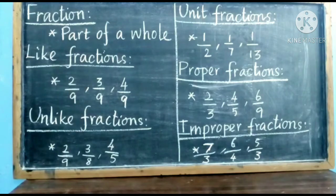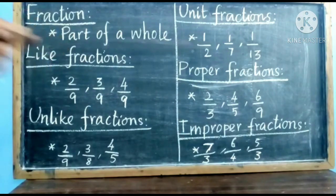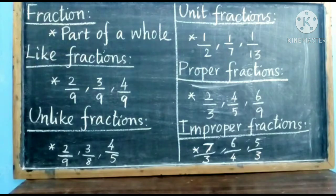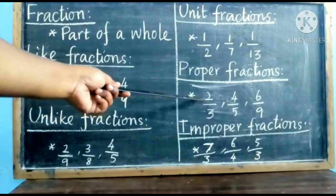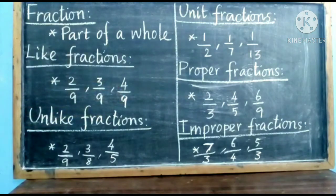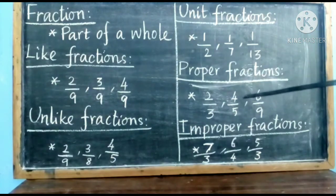The third type is unit fractions. Unit fraction is nothing but fractions with the numerator 1. The set of fractions with numerator 1 are called unit fractions. The next type is proper fraction. In a proper fraction, the numerator should be small. Look at the first fraction 2 by 3 — the numerator 2 is smaller than the denominator. So it is a proper fraction. Look at 4 by 5 — the numerator 4 is smaller than the denominator 5, so it is also a proper fraction.